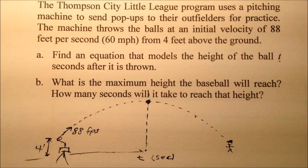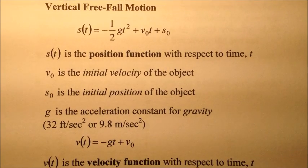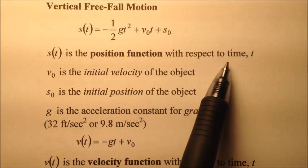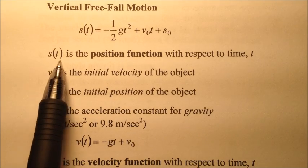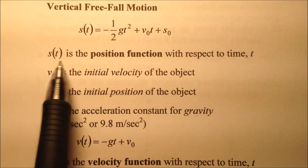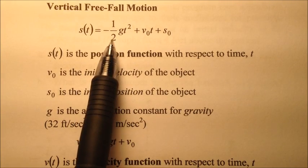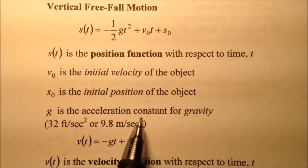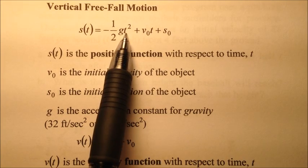We can use our vertical freefall motion formulas. s(t) is the position function with respect to time, our dependent variable. It's the distance the ball is from the ground. The formula is s(t) = -½gt² + v₀t + s₀, where g is the acceleration constant for gravity and t is time.